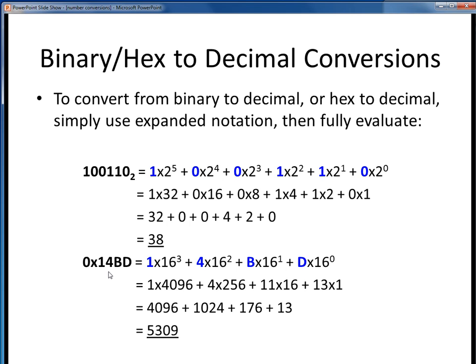So now let's say we wanted to convert hex 14BD into decimal. Well, we'd do a similar thing as before, except now with a different base. We'd start at the right and figure out the highest power of 16 required. So 16 to the 0, 16 to the 1, 16 to the 2, 16 to the 3. So our highest required power of 16 is 16 to the 3rd.